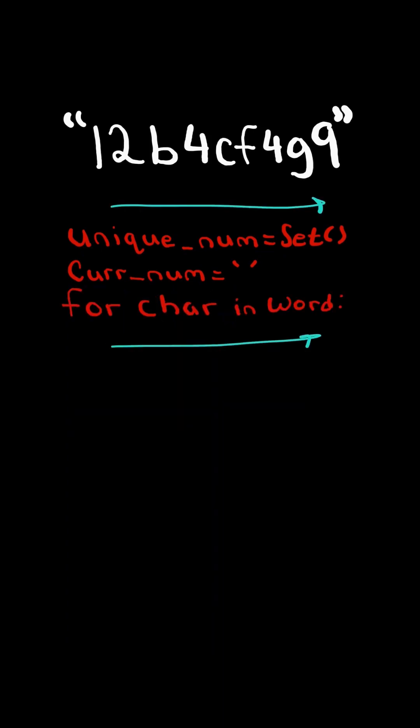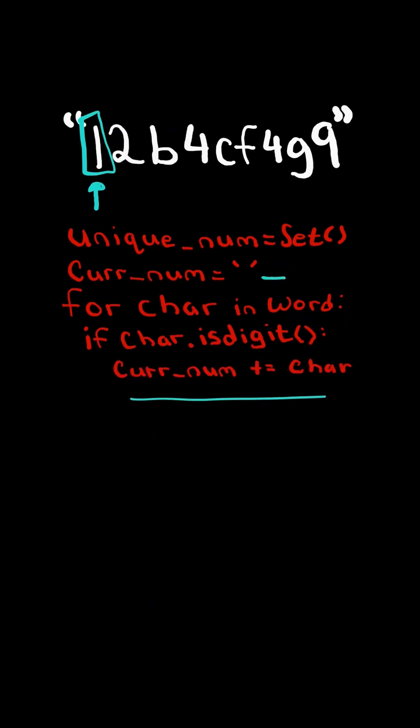We iterate through the string. If the character is a digit, we add it to the current number, continuing to add digits as we encounter them.